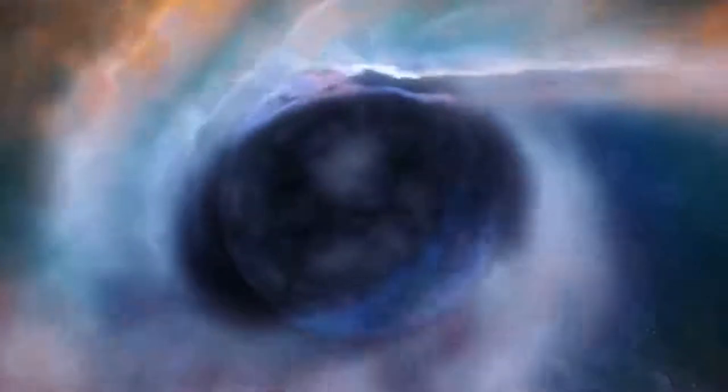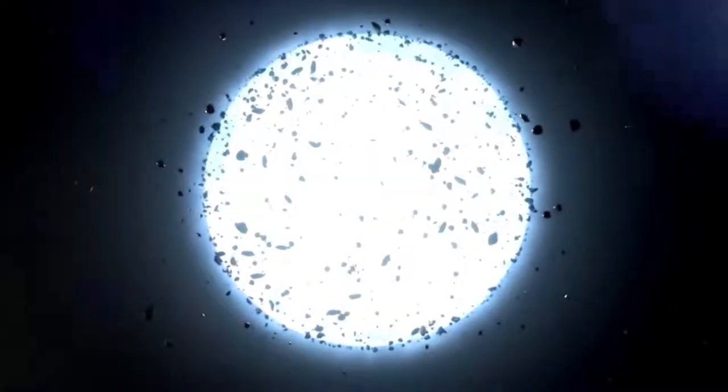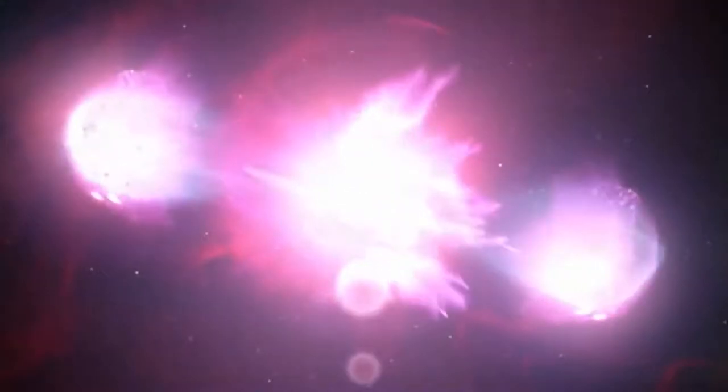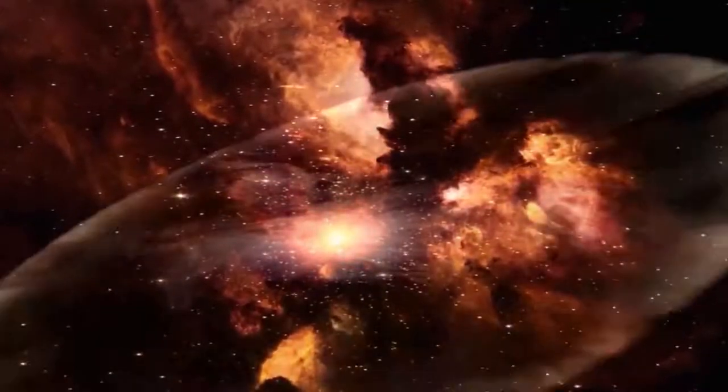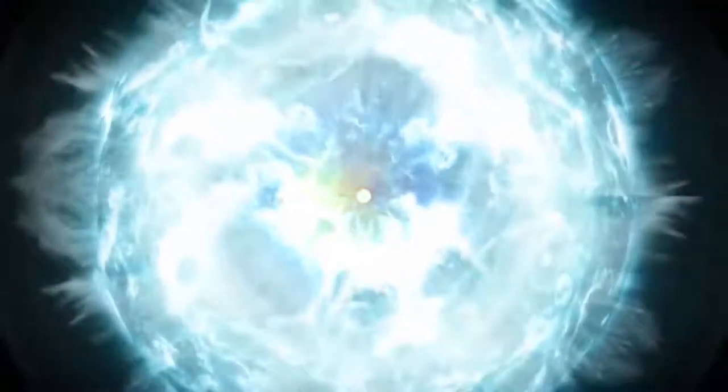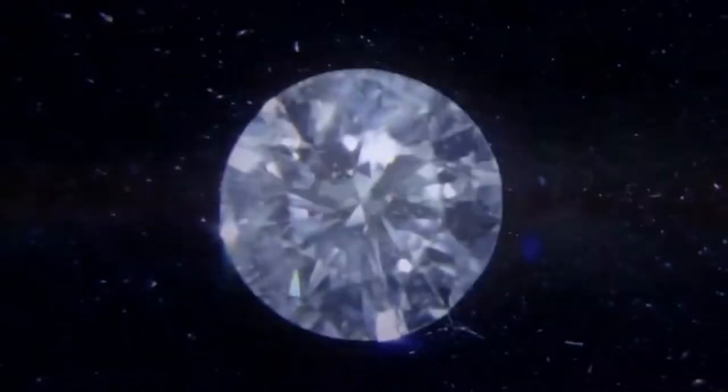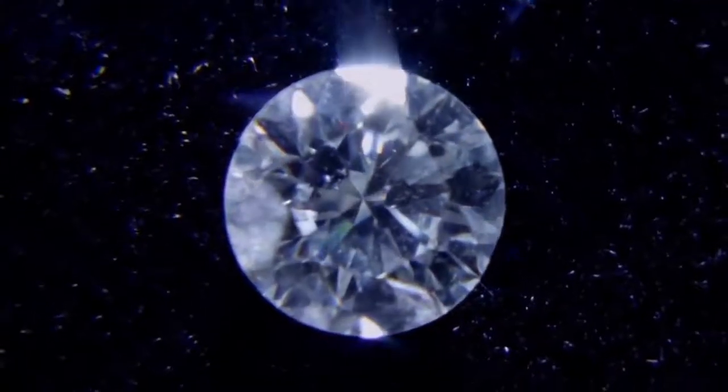Scientists believe that 1438b is a remnant of a star that had its outer layers stripped away by the pulsar with its incredibly strong magnetic field. What's left is a planet that's composed largely of crystalline carbon, making this planet a giant diamond five times larger than the Earth but with a density far greater than diamonds.